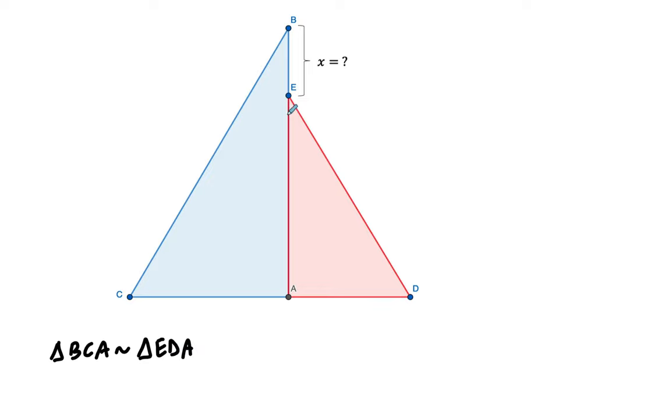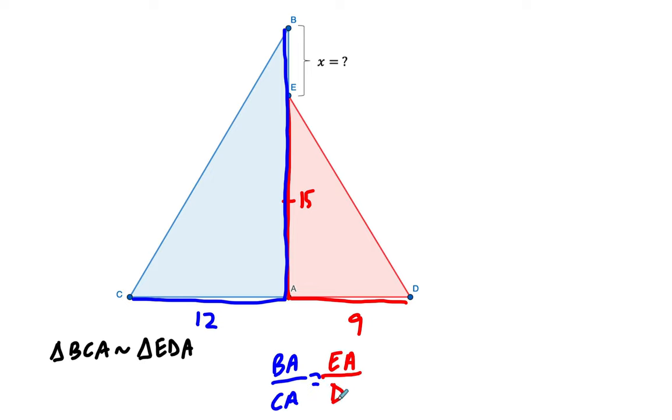you would then be given some information about the side lengths. So for example, I'll say that EA, you would be given a side length. Let's say it's 15. And then AD, another side length here, is 9. Then on the other triangle, maybe you're told that from A to C is 12. And if you're asked to find x, you want to think about this full length here. So if these two triangles are similar, we know this full length, so BA to CA, that ratio would have to be equal to EA, right, to this, and then to DA here. So the ratio between these two sides, we're going to have to do the ratio between this larger side to this shorter side, and you could rearrange that.